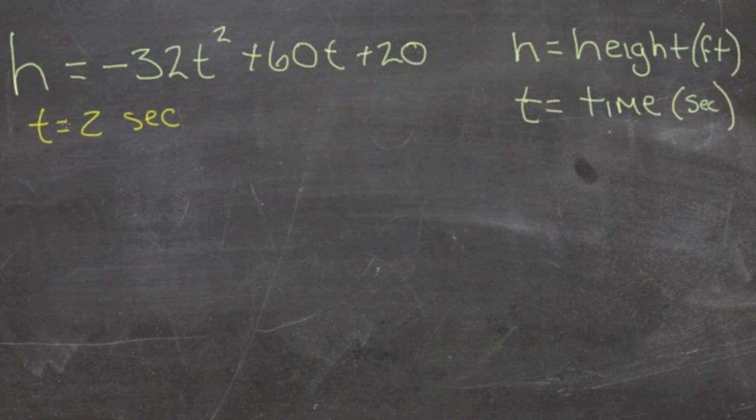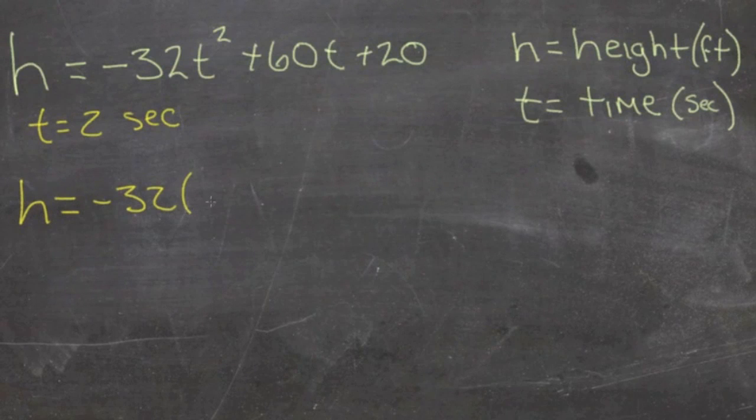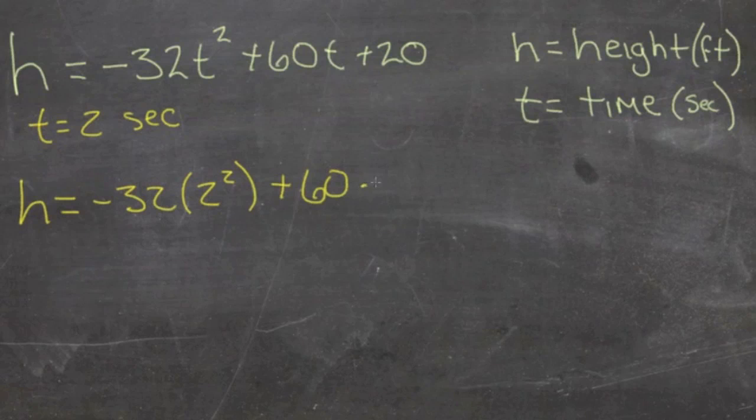What we're going to do is plug this value in where t is, and we're going to get h equals negative 32 times 2 squared plus 60 times 2 plus 20.